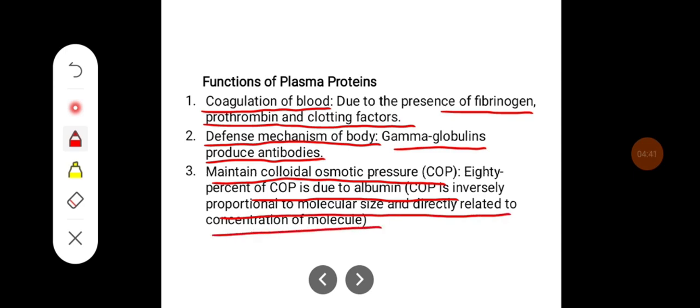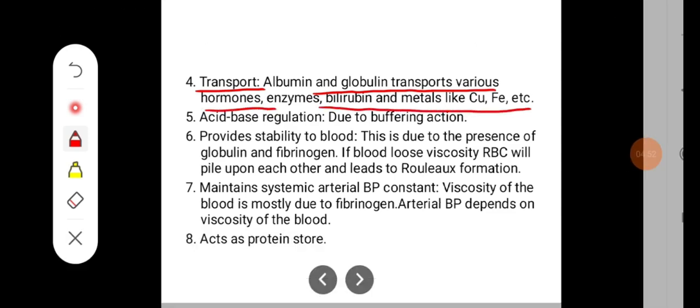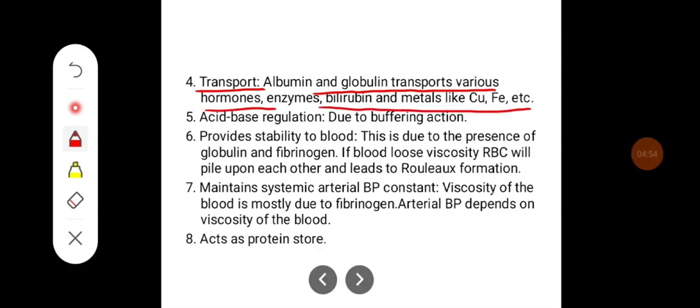Plasma proteins are involved in transport—albumin and globulin transport various hormones, enzymes, bilirubin, and metals like copper and iron. They are important for acid-base balance or regulation because of their buffering action. They provide stability to the blood due to the presence of globulin and fibrinogen.